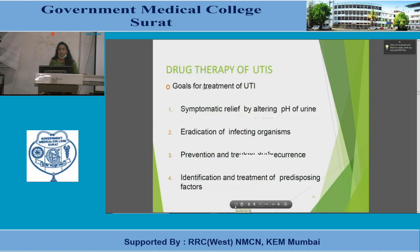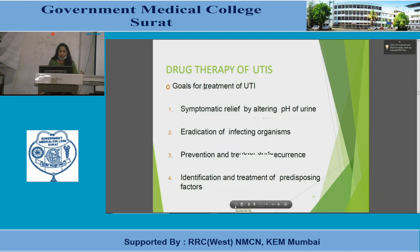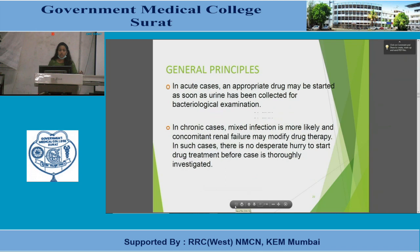The goals of treatment of UTIs are: symptomatic relief by altering the pH of urine, eradication of infective organisms, prevention and treatment of recurrence by identifying relevant factors, and identification and treatment of predisposing factors. In acute cases, an appropriate drug may be started as soon as urine has been collected for bacteriological examination. In chronic cases, mixed infection is more likely and concomitant renal failure may modify therapy, so there is no hurry to start treatment before thorough investigation.